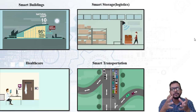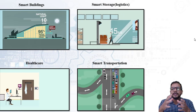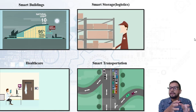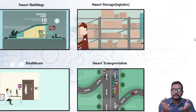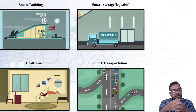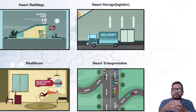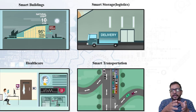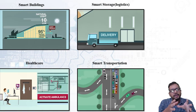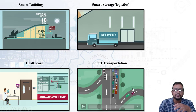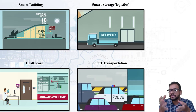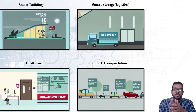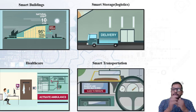In case of smart storage, by making use of IoT, it will help the delivery person to keep goods at a particular place where space is available. It receives instructions with the help of the internet. In healthcare, a heart rate sensor senses a person's heartbeat and sends a signal directly to the doctor's mobile via the internet. The doctor then activates an ambulance. In smart transportation, traffic sensors on the road give vehicles an indication of which route has lesser traffic.